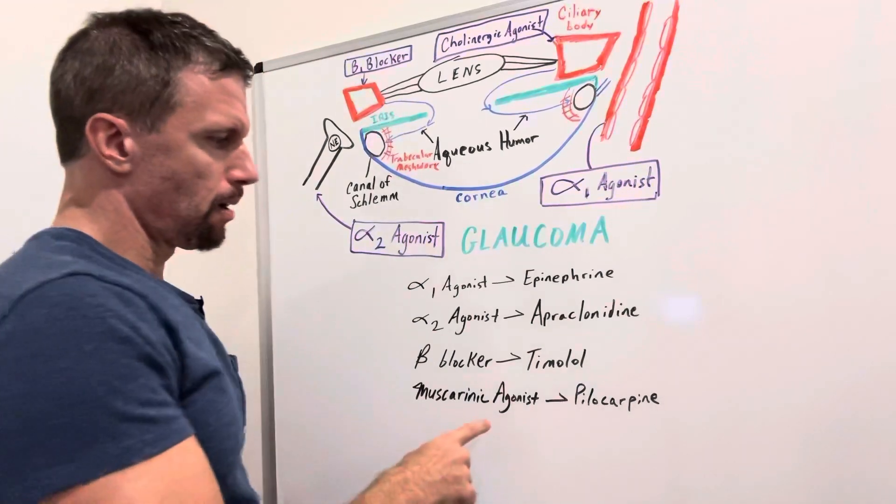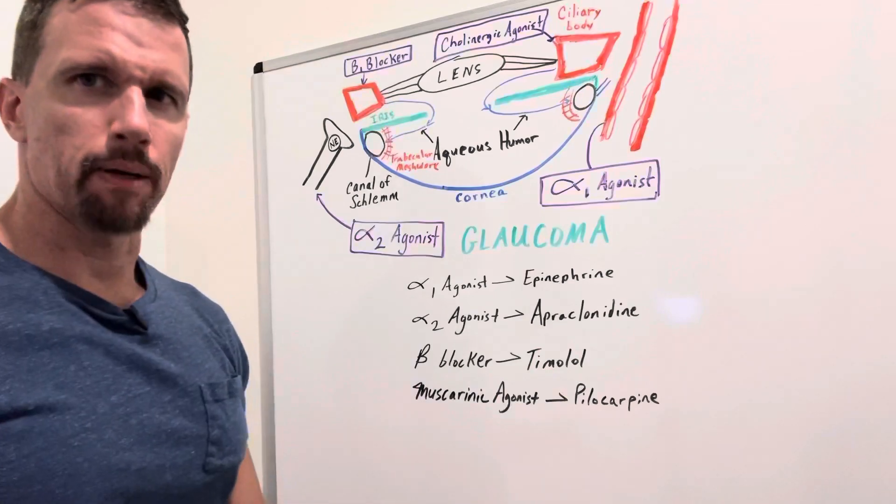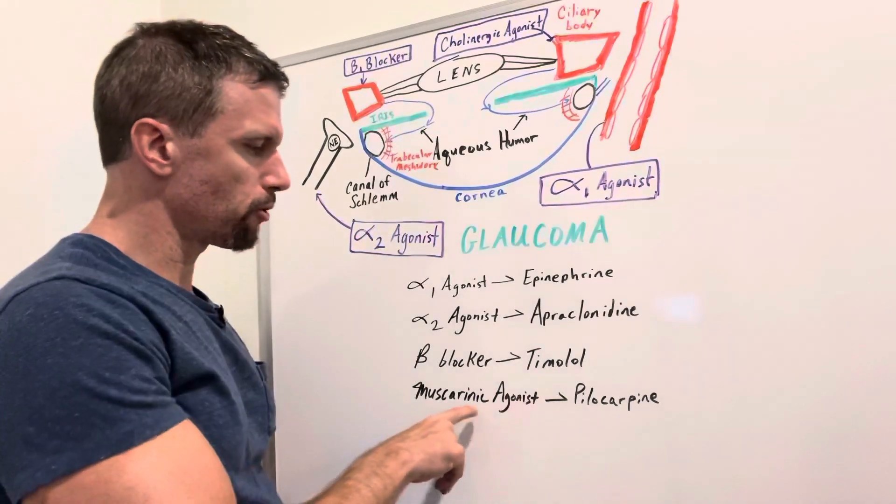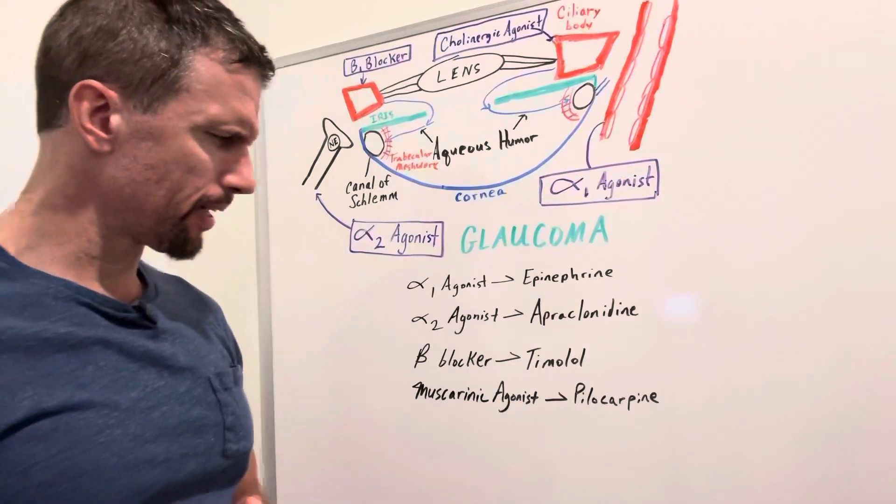Let's go to another, pilocarpine. This one's pretty common for glaucoma and it's a muscarinic agonist. Let's think about this.